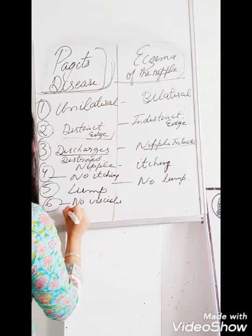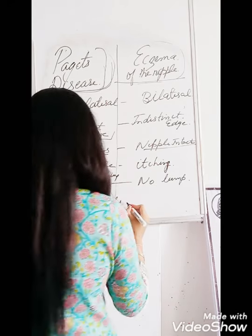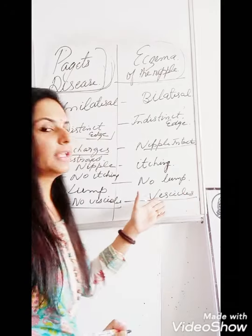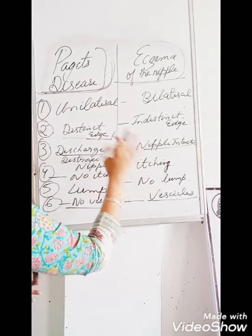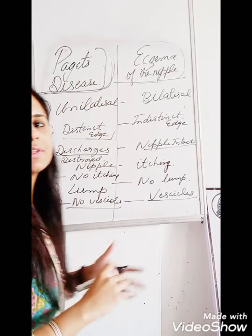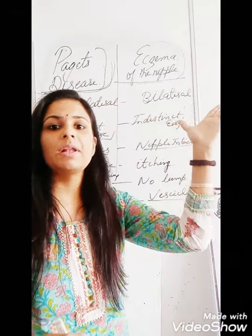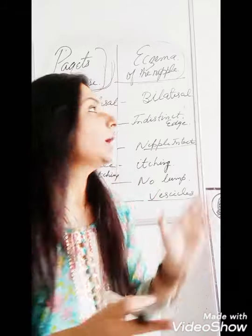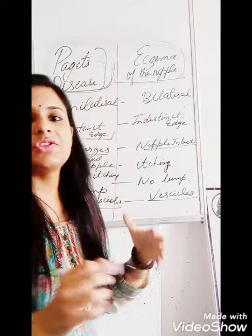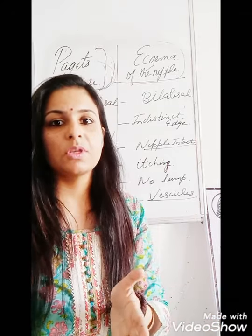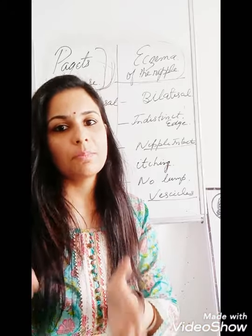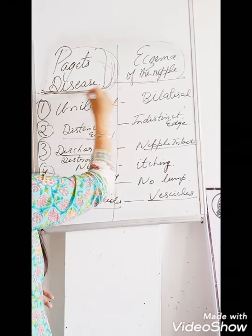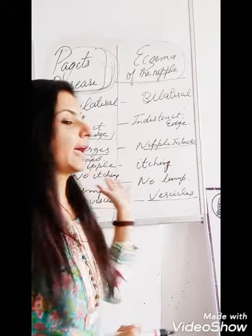The seventh difference: in eczema of the nipple, there are vesicles — fluid-filled cavities or sacs — that can erupt and discharge liquid, along with itching, and the condition is bilateral. Additionally, eczema of the nipple is usually reported during the lactation period in lactating women, whereas Paget's disease generally occurs after menopause — in women who have finished their menses.